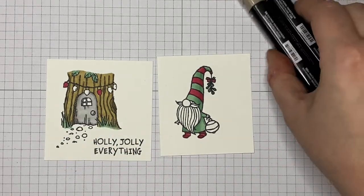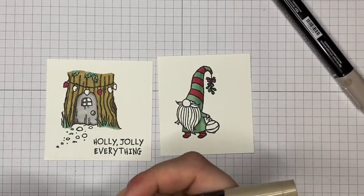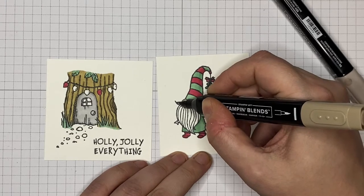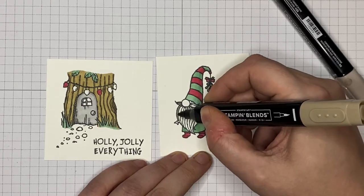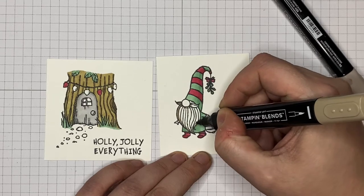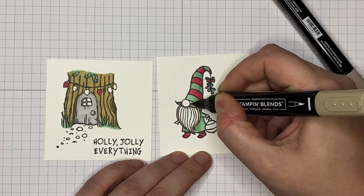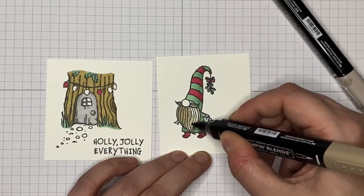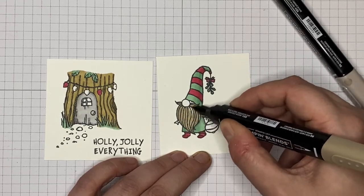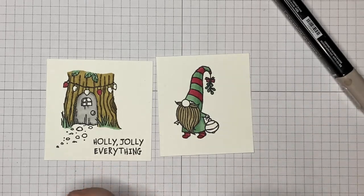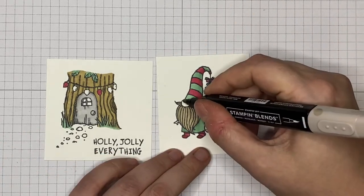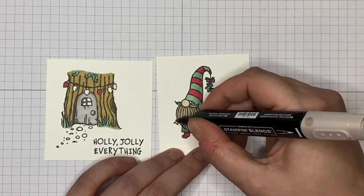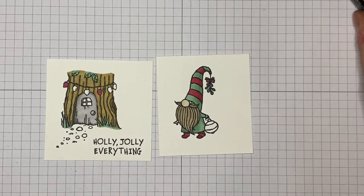Okay so this is crumb cake. I'm going to use dark crumb cake on his beard and then light crumb cake is a good skin color. Ivory is too so you can use either but because I've used crumb cake for his beard I'm just going to use the light one for his nose and his face and his hands. Like so.